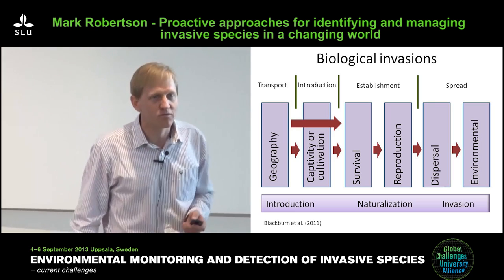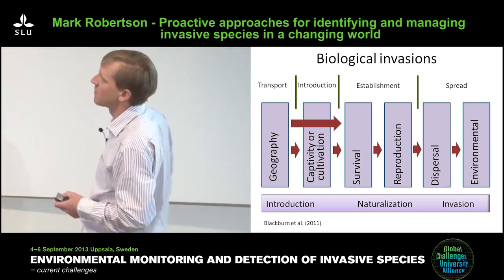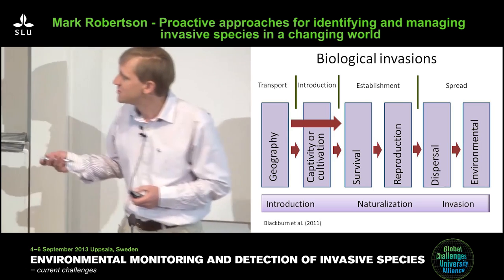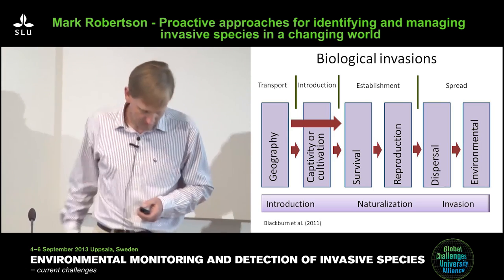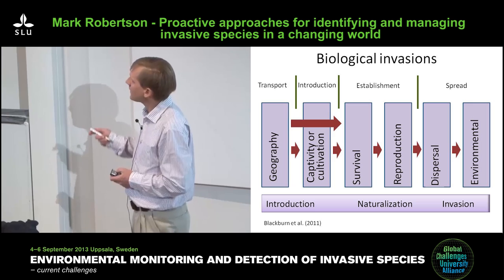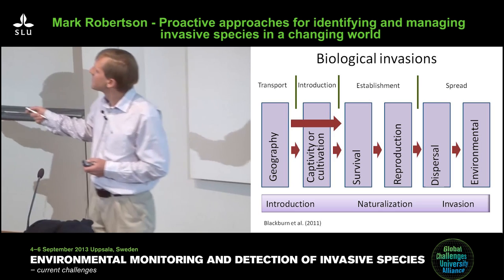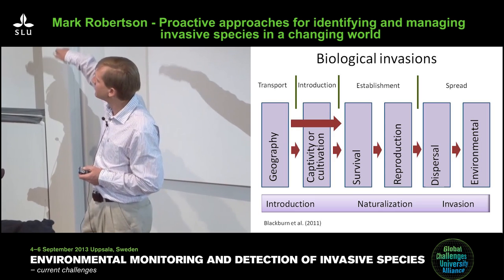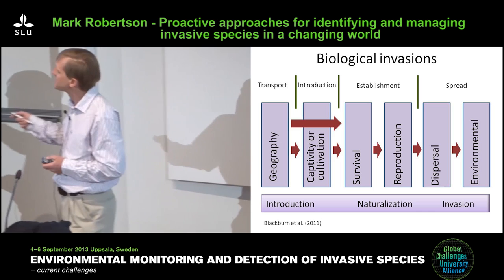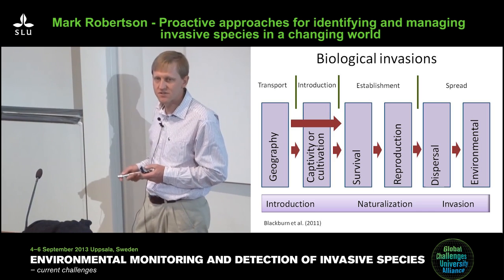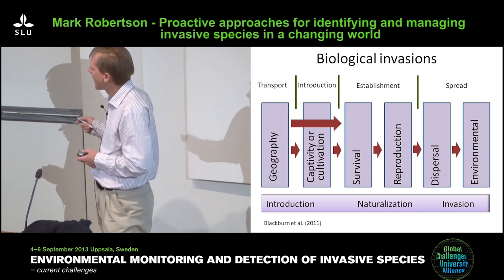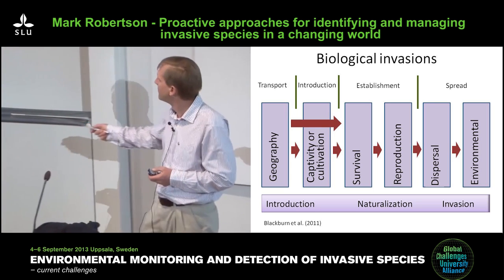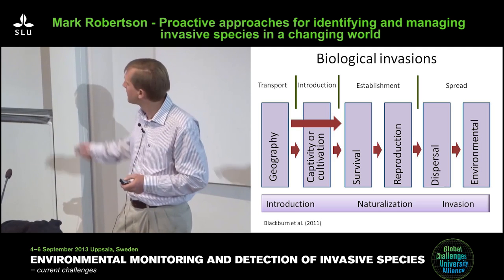Which of these thousands of organisms that we know in the world will become invasive if they're introduced? Luckily, we've got a good framework to deal with these sorts of problems, which has been most recently expanded on by Blackburn and colleagues. There are various stages: a transport stage, an introduction, an establishment, and a spread stage. These are barriers an organism needs to cross in order to ultimately become invasive — an introduction, naturalization, and invasion continuum.